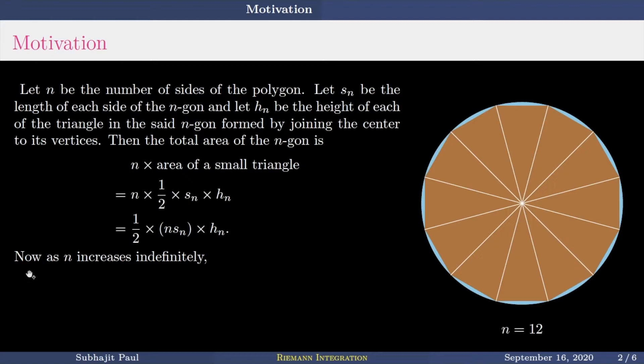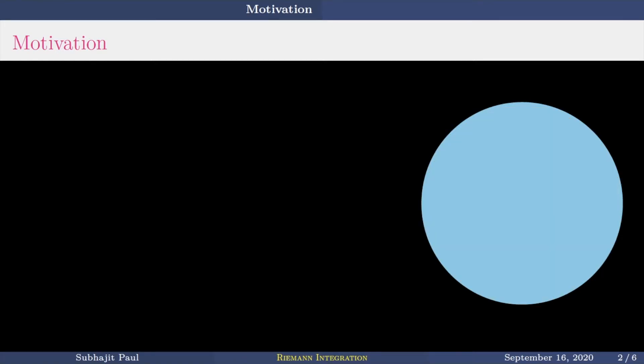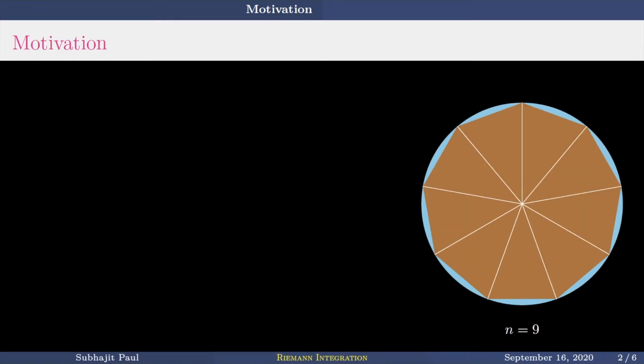Now, as N increases indefinitely, we started with N equal to 4, then 5, then 6, then 7, 8, 9, 10, 11, 12, and so this way.